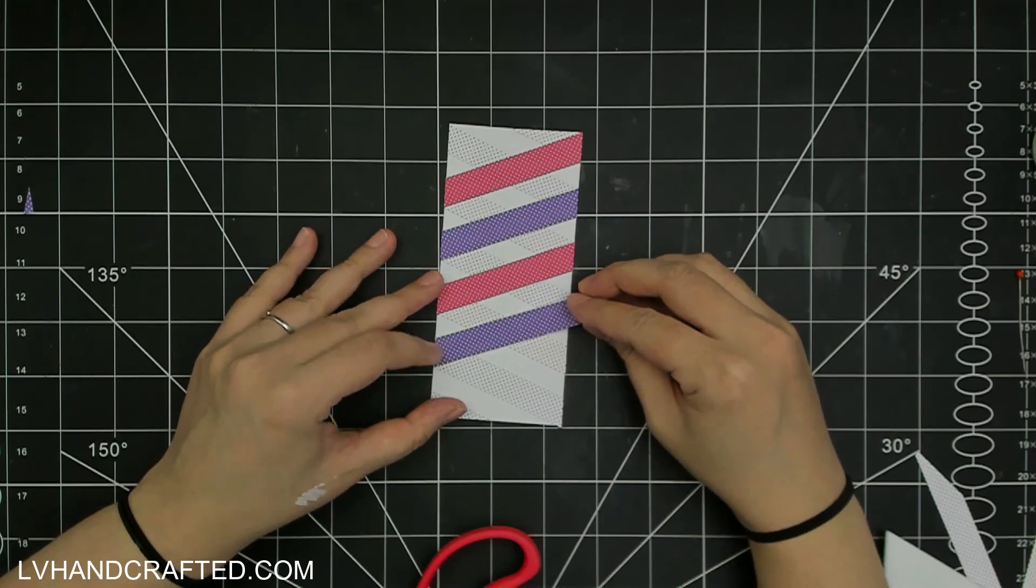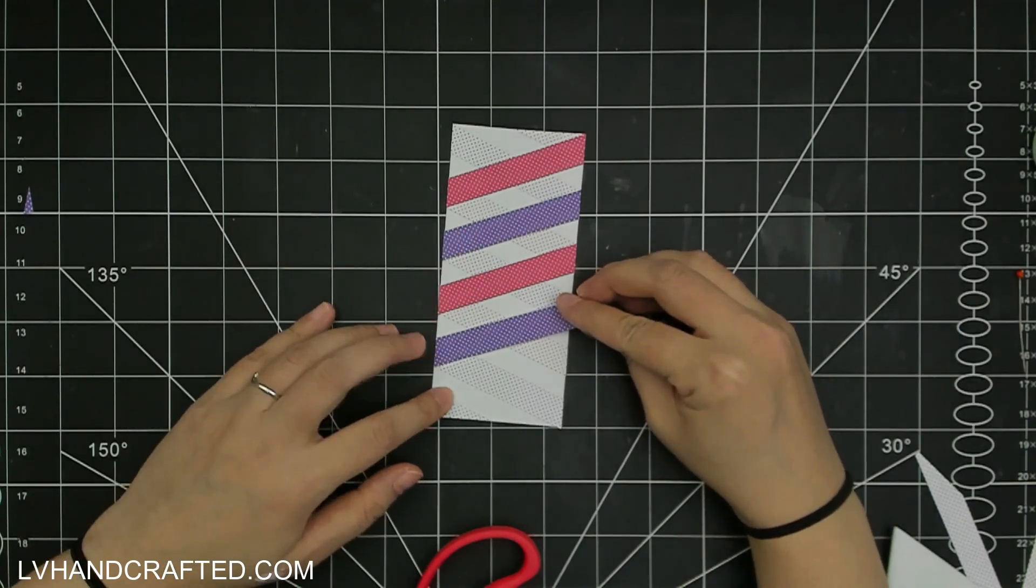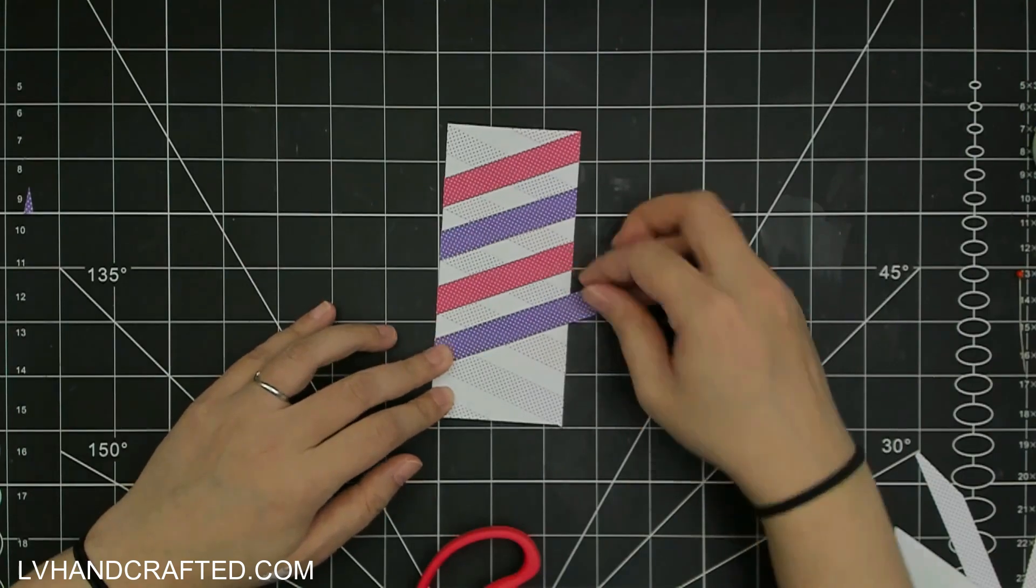And of course I chose the purple and pinks because that's how I colored in my Tomta gnomes, so pretty fun. This will be like a little bit of an accent panel for my card.